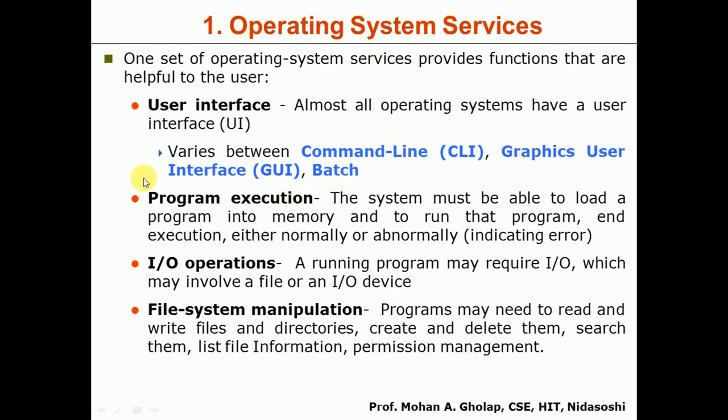The second OS service is Program Execution. The system must be able to load a program into memory and run it, terminating execution either normally or abnormally. Programs are usually stored as files on secondary storage. Whenever you want to execute a program, that file must first be loaded into main memory. The OS provides the services required for this loading and for terminating the program when done.